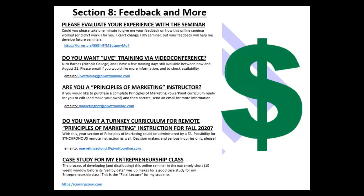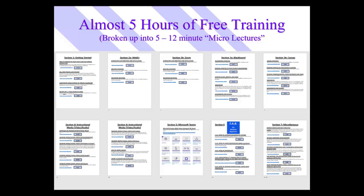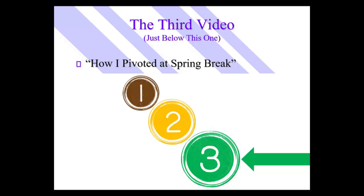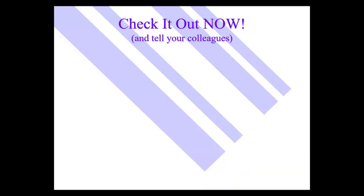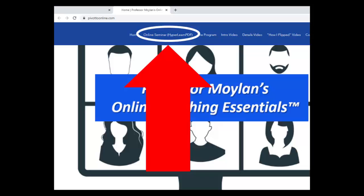Section 8 is the premium content. It asks you to evaluate your experience with the seminar and whether you want live training via video conference. It's almost five hours of free training broken up into five to 12-minute micro lectures — very modular, so pick and choose what you need and skip what you don't. There's also a third video on this website showing how the instructor pivoted courses at spring break, if you want ideas. If you just want to get to the seminar, reach up to the hyperlink and check it out, and tell your colleagues about the online seminar link at the top. Good luck pivoting to online.